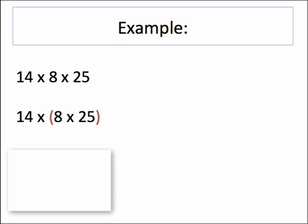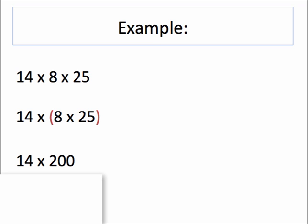In this case, if I look at 8 and 25, I can associate them first to get a product of 200. Then I have a 14 times 200, which is much easier to compute than any other arrangement.